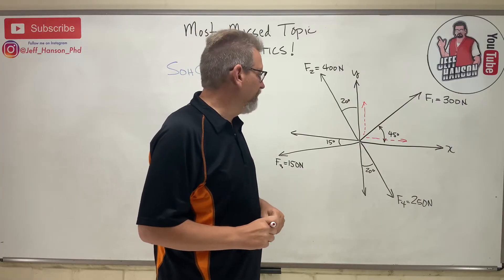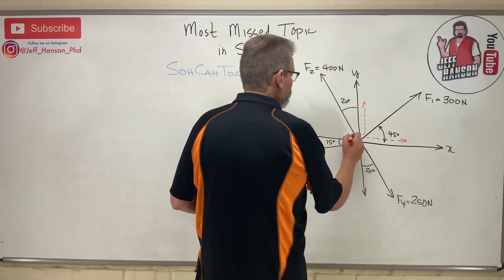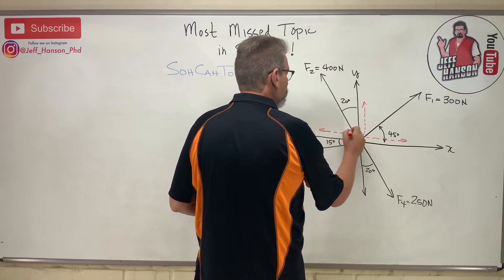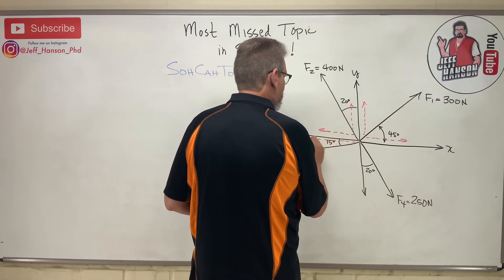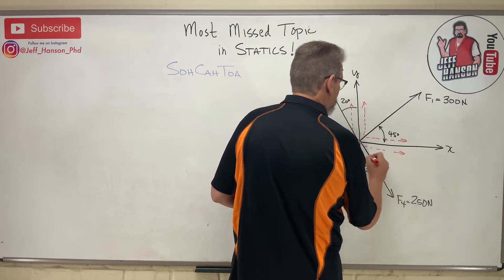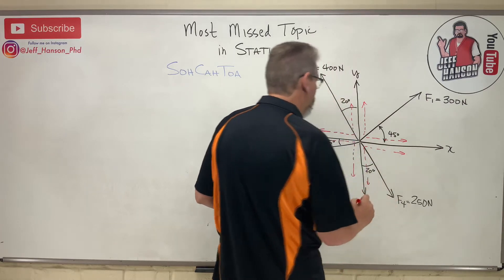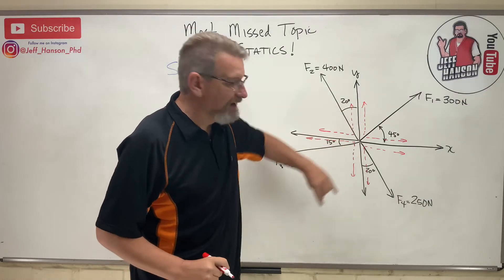So this guy has two components, and I love it when my students have a little color code thing that they do their components in. So you have this guy has two components, this guy over here has two components, this guy is going to have two components, and this guy is going to have two components. Because they're all at an angle, right? So I've got to figure out 2, 4, 6, 8 components.